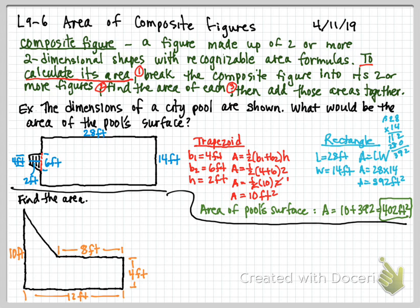There are a couple of ways to approach this. One way: if I drop a line here, I could figure out the trapezoid. The whole length is 12, the top is 8, so 12 minus 8 gives me 4. That gives me an 8-by-4 rectangle. But since we just did a trapezoid, let's go a different way.